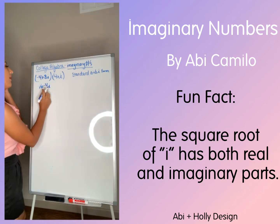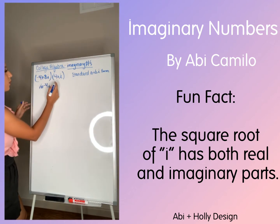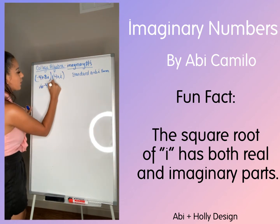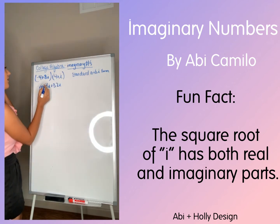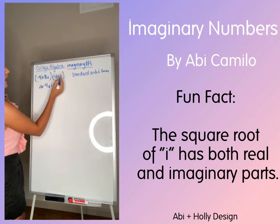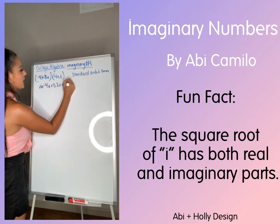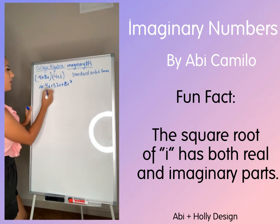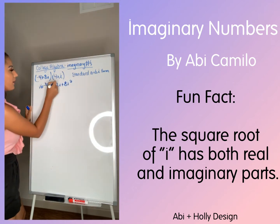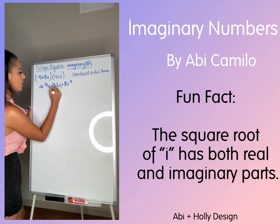Then we're going to have positive 8i multiplied by 4, which is going to give us 32i. Then we're going to have 8i times i, which is going to give us plus 8i squared. Negative 4i plus 32i is going to give us 28i.